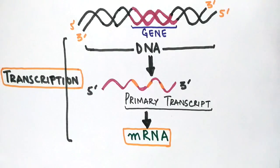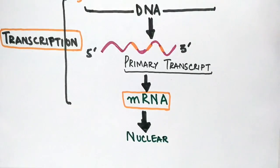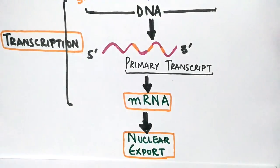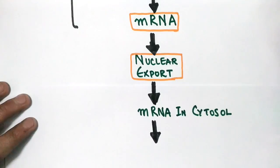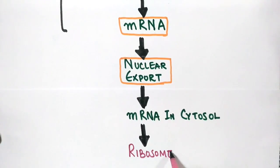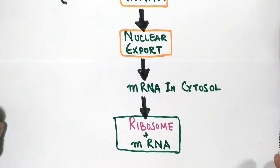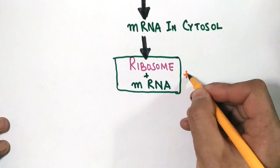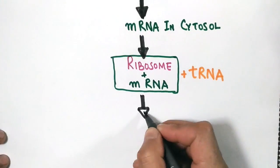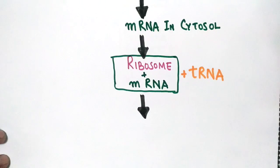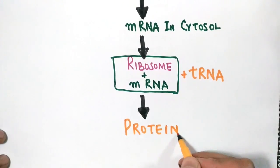After transcription, the information of the gene is now with the mRNA molecule and it needs to get expressed. First, the mRNA molecule is exported from nucleus to cytosol. Here in the cytosol, it binds with ribosome and with the help of tRNA creates an initiation complex. After that, the mRNA molecule translates the information that's coded in the form of codons and transfers it into a fully functional protein.